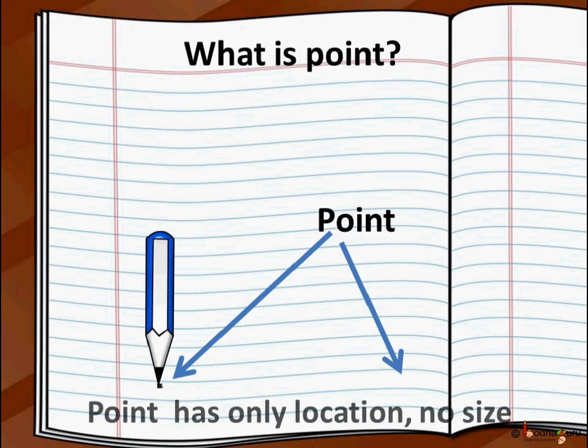And this dot is called a point. So we say here is the point. But we cannot measure its length using a ruler. Here a point is an exact location but it has no size. It has only position.